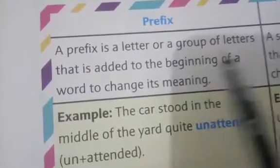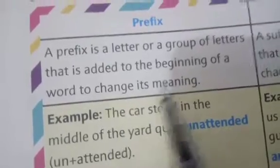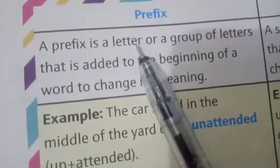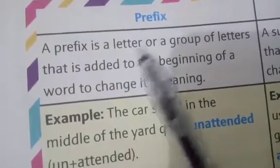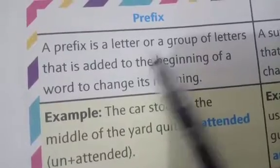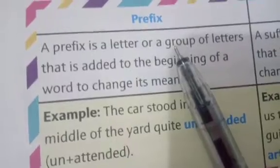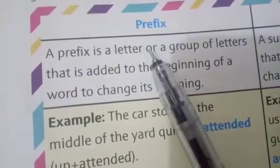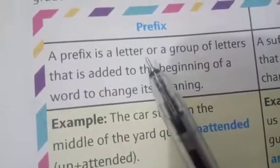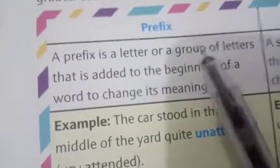A prefix is a letter or a group of letters that's added to the beginning of a word to change its meaning. So it's very simple. A prefix can be a single letter or it can be more than one letter. When the single letter or more than one letter is added to a word before the word, when letters are added to a word in front of it so as to change the meaning of that word, that's called prefix.